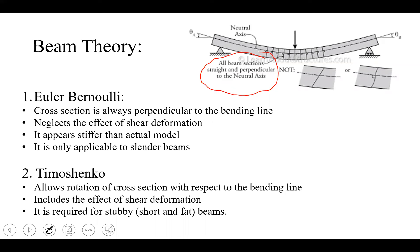Euler-Bernoulli is applicable when we are talking about slender beams where the cross-section is much smaller than the length of the beam. The other theory, which is a little more complicated but more accurate, is Timoshenko beam theory. Timoshenko does not have the Euler-Bernoulli assumption; it allows rotation and warping of the cross-section, so we can include the effect of shear deformation. For slender beams we don't need Timoshenko, but as the beam gets stubby — short and fat — we have to use Timoshenko. If the cross-section is very large, it's better to use solid 2D elements.